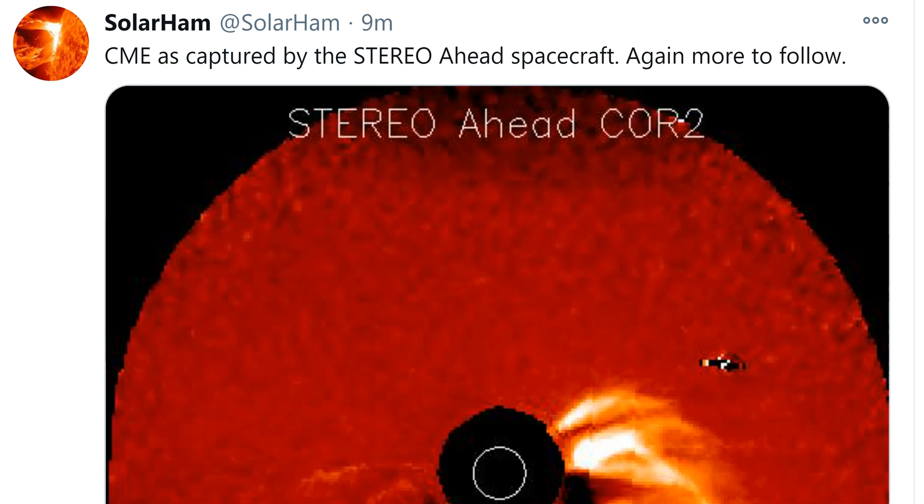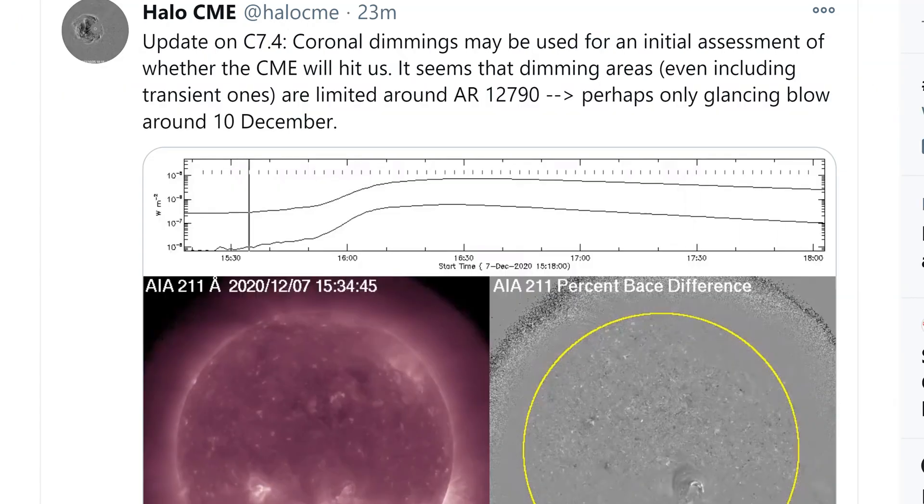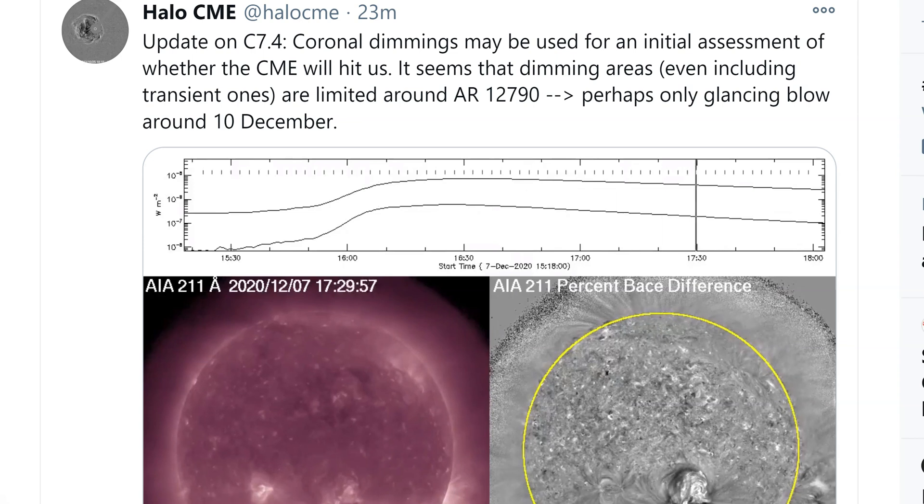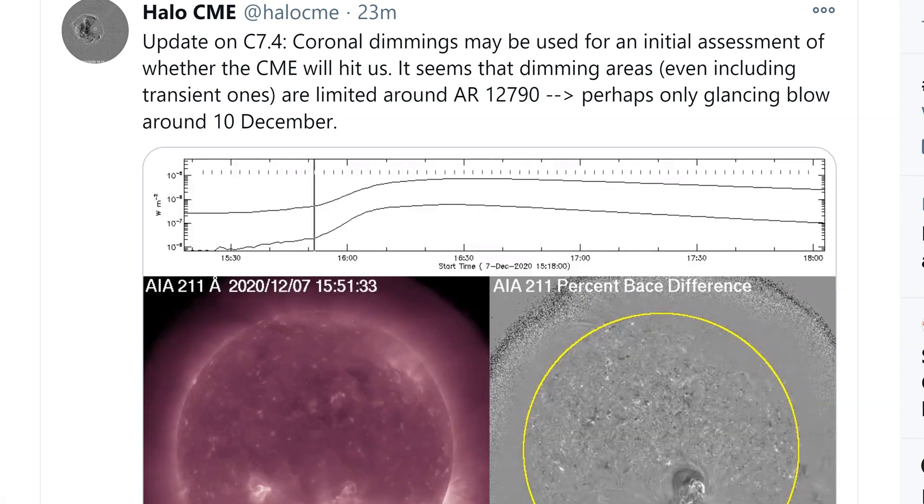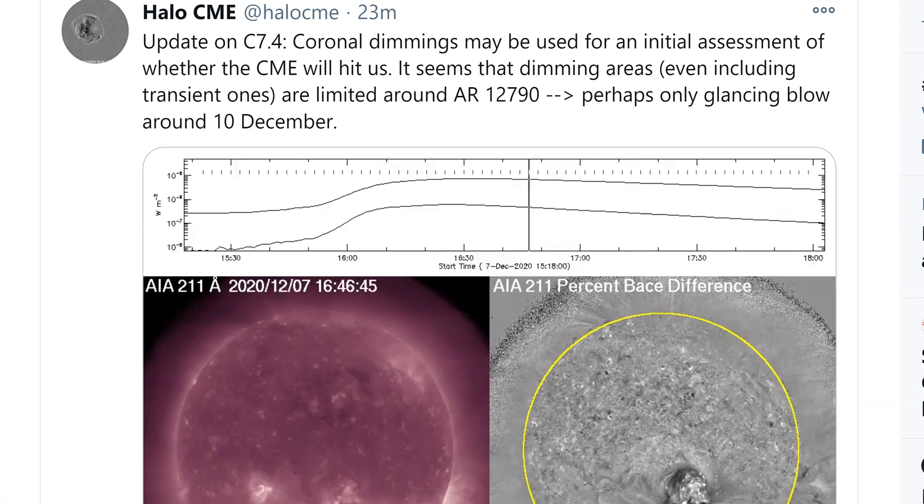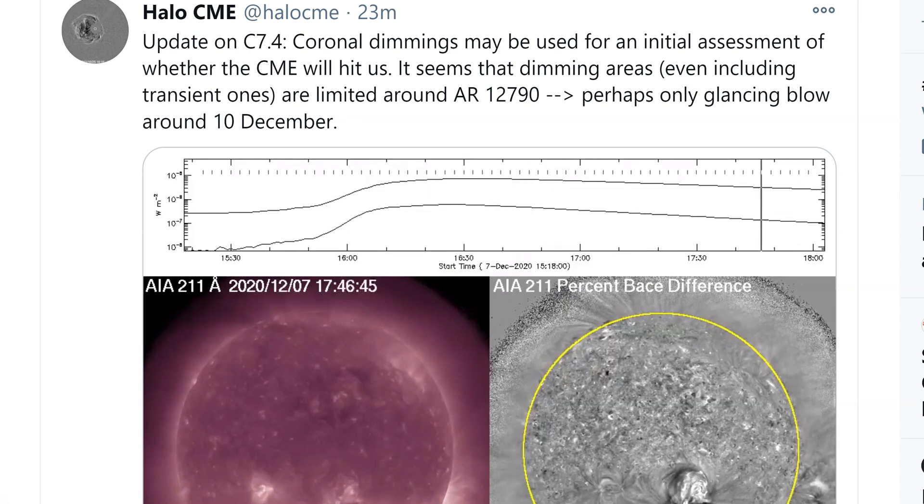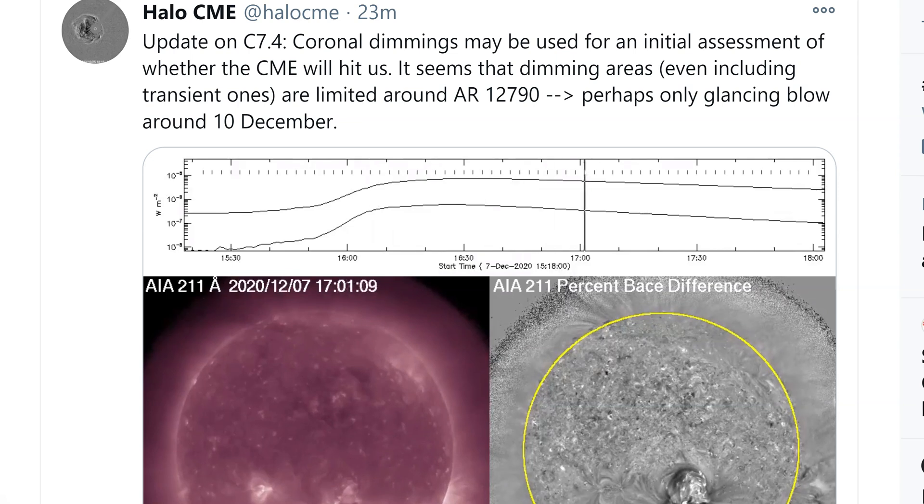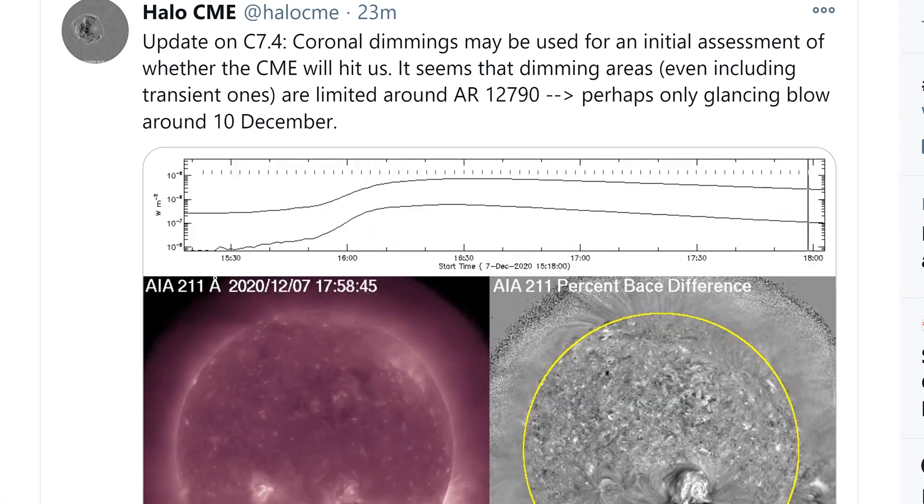Remember, when the sun acts weird, Earth weather acts weird and people kind of lose their minds. We're talking about an update on the C74 coronal dimmings, which may be used for an initial assessment of whether the CME will hit us. It seems that the dimming areas, even including transient ones, are limited around AR 12790, perhaps only a glancing blow around the 10th.